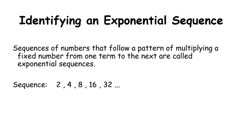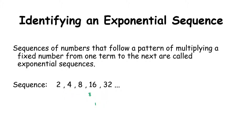Here's an example: 2, 4, 8, 16, 32. It definitely doesn't have a common first difference — we add 2, then 4, then 8, then 16, so it's not linear. We might then check whether it's quadratic with a common second difference, but we add 2, then 4, then 8, so it's not quadratic either. We need to consider what else it could be doing, and the answer is multiplying. Here, 2 is doubled to get 4, 4 is doubled to get 8, 8 is doubled to get 16, and so on.